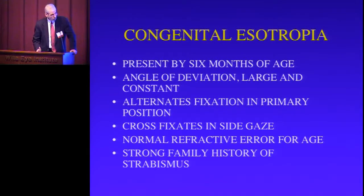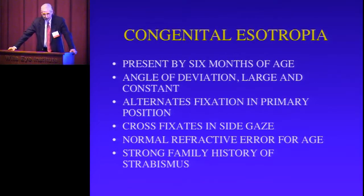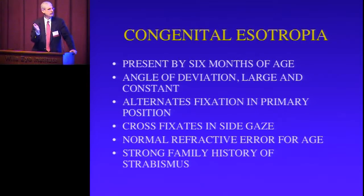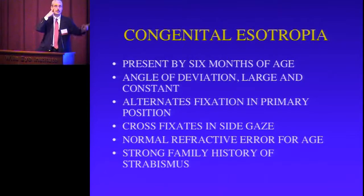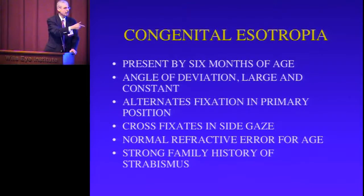The first type of true esotropia is congenital esotropia, usually present by six months of age — though you may see it by three or four months of age. The angle of deviation is very large and constant; they alternate fixation very often — using one eye then switching. They have cross-fixation: they use the right eye to look to the left and the left eye to look to the right. This can look like a bilateral sixth nerve palsy, which is very rare in young children, and it looks like they're not really following because they switch eyes when they reach a certain point.